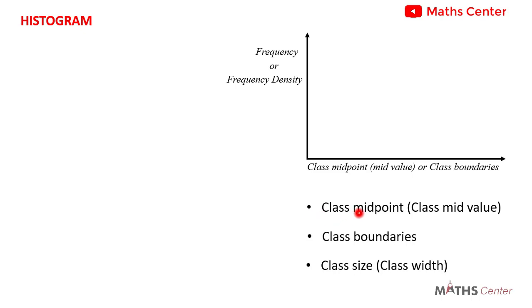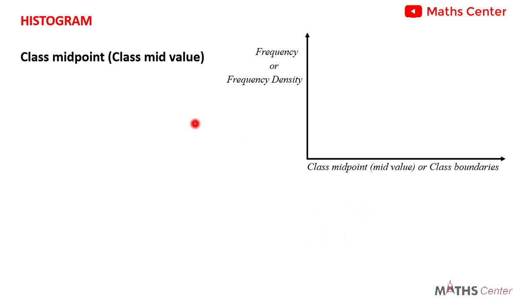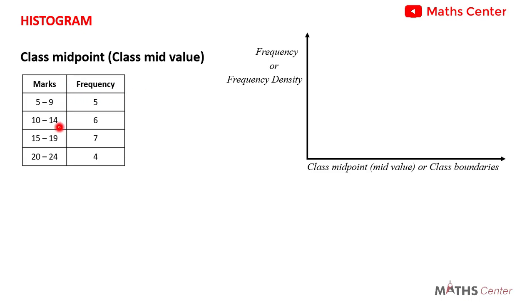Let's begin with the class midpoint, also known as the class mid value. Using this example, let's say these are the marks scored by some students in a test. We have different intervals: 5 to 9, 10 to 14, 15 to 19, and 20 to 24, along with their frequencies.